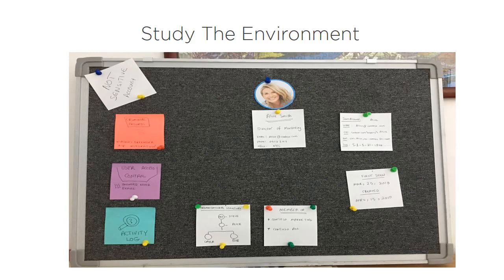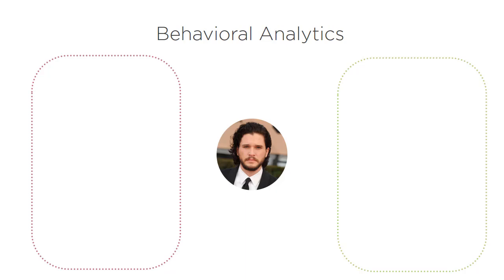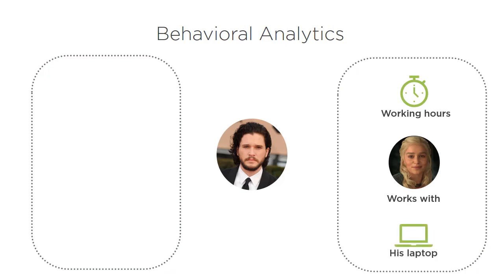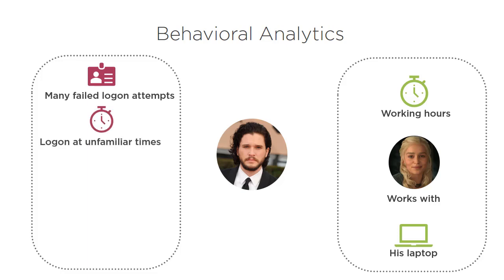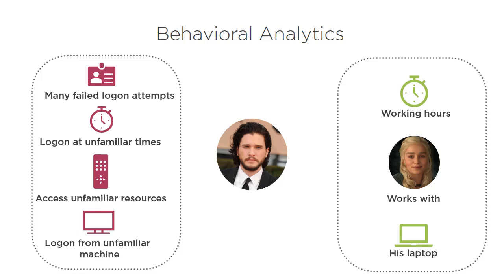Now that Michael has a profile for everyone in the network, he will start studying everyone's behavior. Michael knows Kit, the HR manager in the company — he knows his working hours, who he works with, and what devices he uses. If Michael finds unusual behavior in Kit's account, he can assume there is an attack happening using that account. Such unusual behavior signals might include many failed login attempts, login at unfamiliar times, accessing unfamiliar resources like the financial file share — which is unusual for Kit in the HR department — or if his account is logging in from unfamiliar machines. All those signals might mean his account is compromised, and there is an attack happening using pass-the-hash or pass-the-ticket techniques.